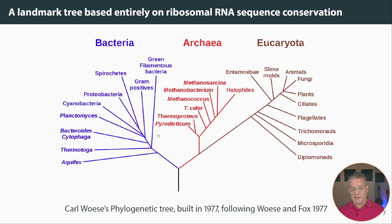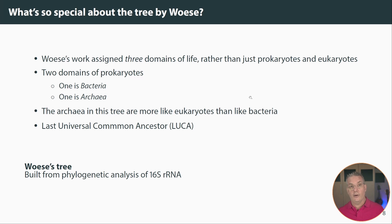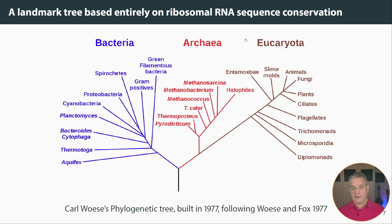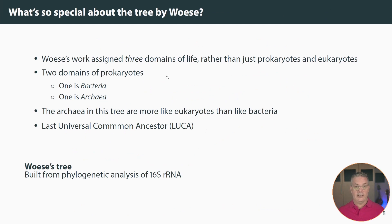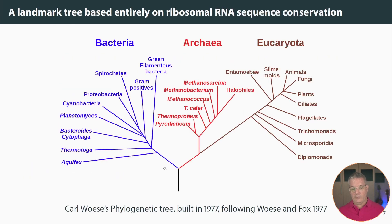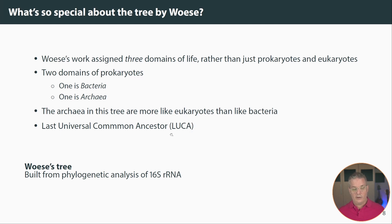The reason it was controversial is, among other things, it has three major domains of life, which was not known before: the bacteria, the archaea, and the eukaryotes. Prior to Woese's work, it was thought that there were basically eukaryotes and prokaryotes. Woese identified these three domains of life based on molecular evolutionary trees — two domains of prokaryotes: the bacteria and the archaea. In this tree, the archaea are near the eukaryotes, so the divergence from a universal common ancestor goes towards bacteria and then towards archaea and eukaryotes. Woese's tree is based on phylogenetic analysis of 16S ribosomal RNA, and that was a landmark.